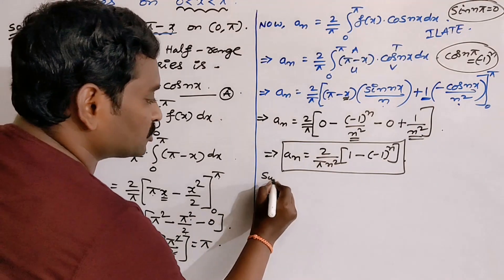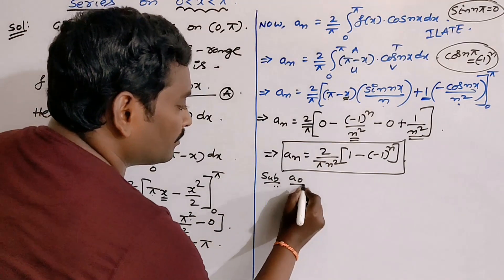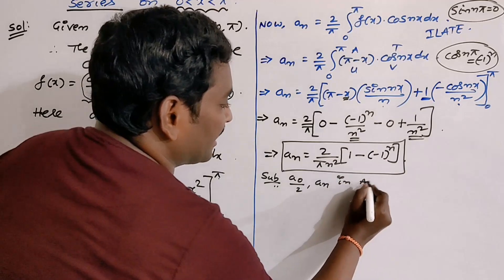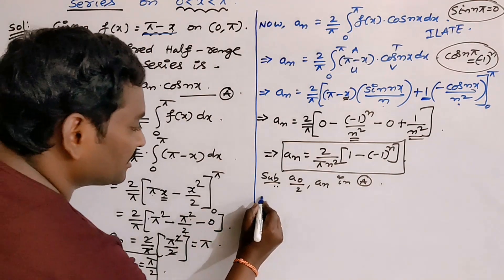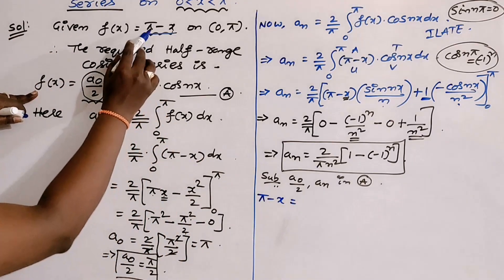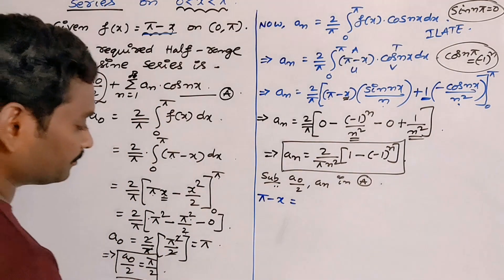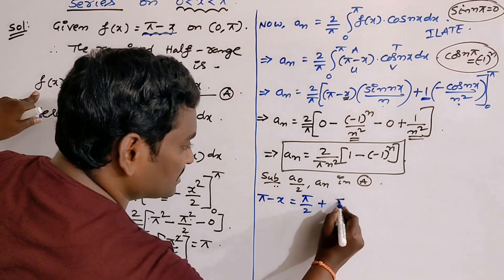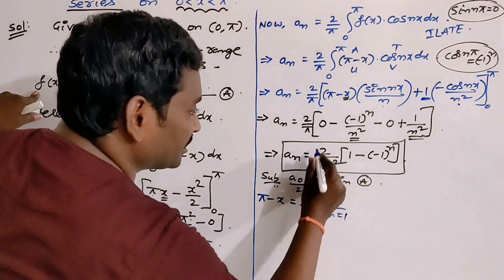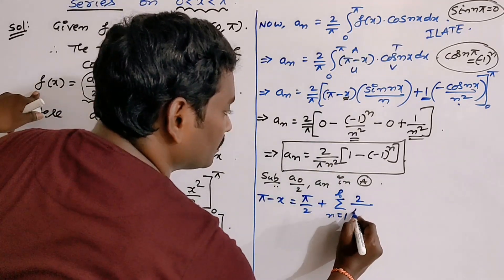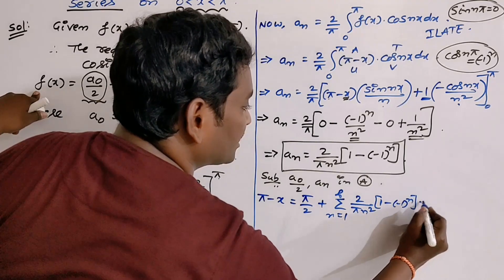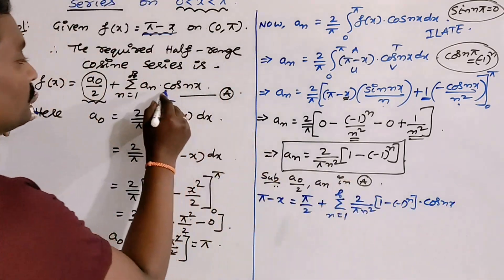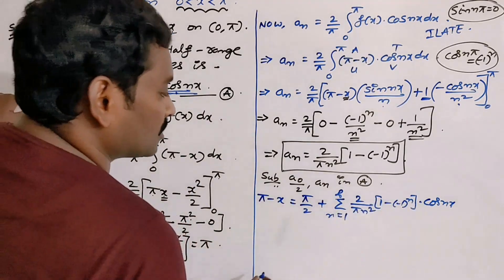Finally, substitute a₀/2 and aₙ in capital A. What is capital A? Formula of half-range cosine series. What is it? f(x), it would be given function π - x = first term π/2 + Σ(n=1 to ∞)... Write aₙ value: 2/(πn²) whole into [1 - (-1)ⁿ] times coefficient of aₙ. Don't forget to write this term in the product, which is cos(nx).